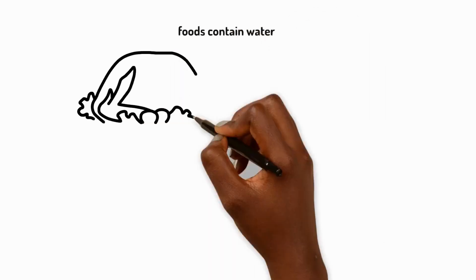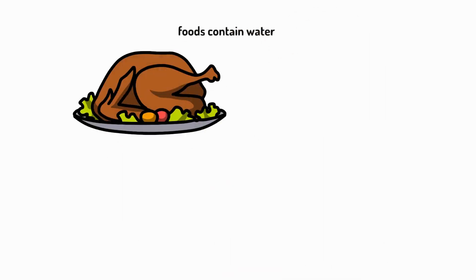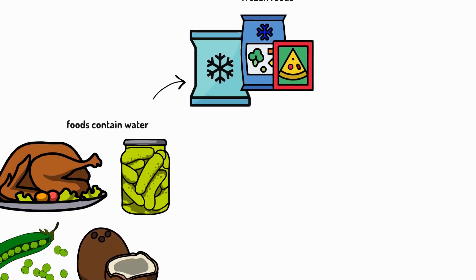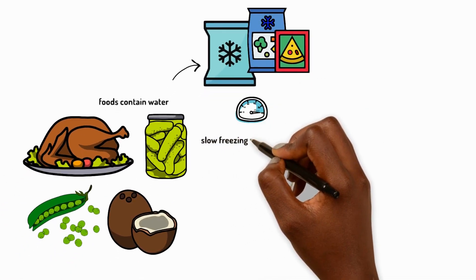This is important for food. Animals are about 60% water, and many fruits and vegetables have about 90% water inside them. If we freeze these foods slowly, the water inside them forms large ice crystals.